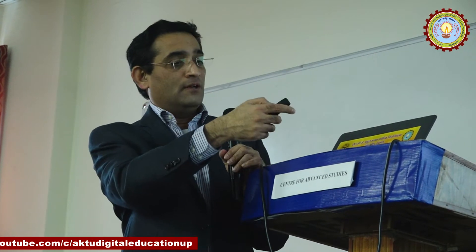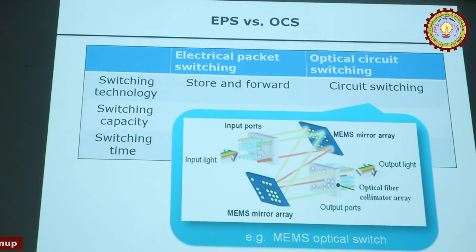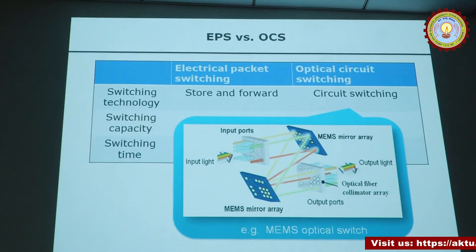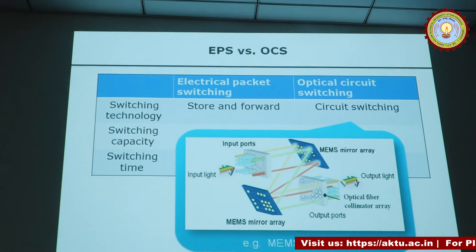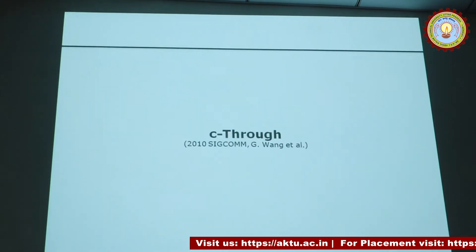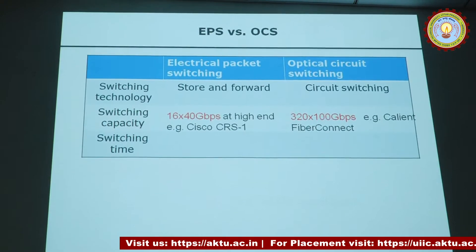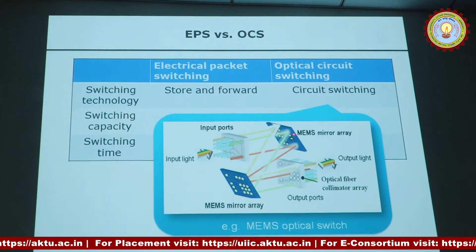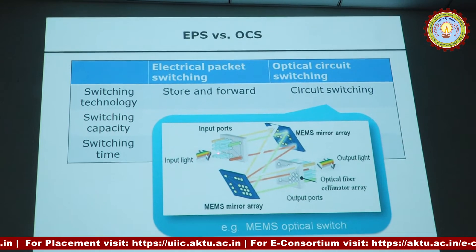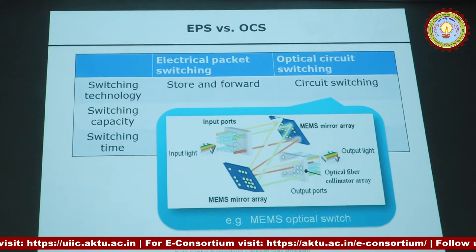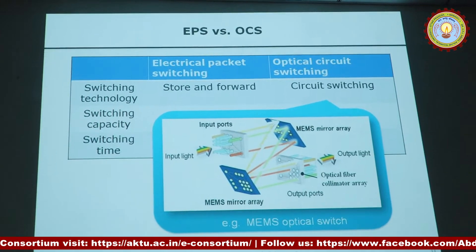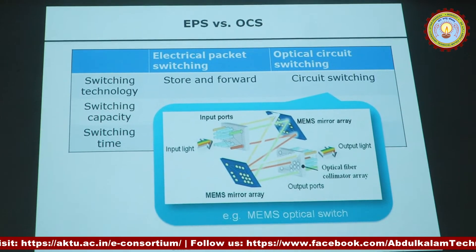This illustrates the difference between store-and-forward and circuit switching. Optical switching is done using a MEMS optical switch — Micro-Electro-Mechanical System — which uses an array of mirrors. By tilting these mirrors, you can direct input light to whichever output you want. That's how switching is accomplished in optics.